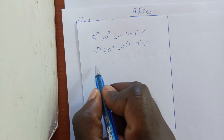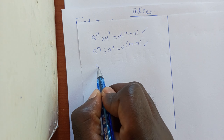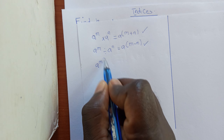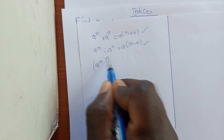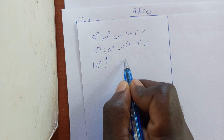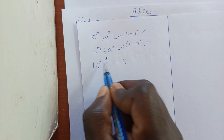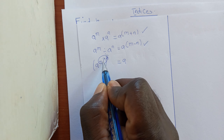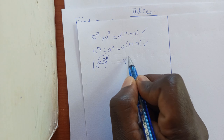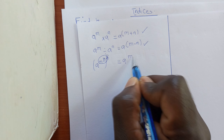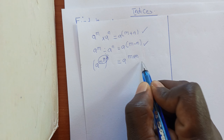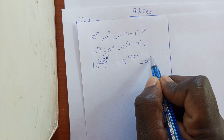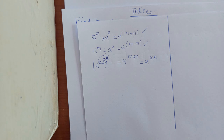Another rule: if we have A raised to M, and that is then raised to N, we multiply the powers together. So this gives us A raised to M times N.